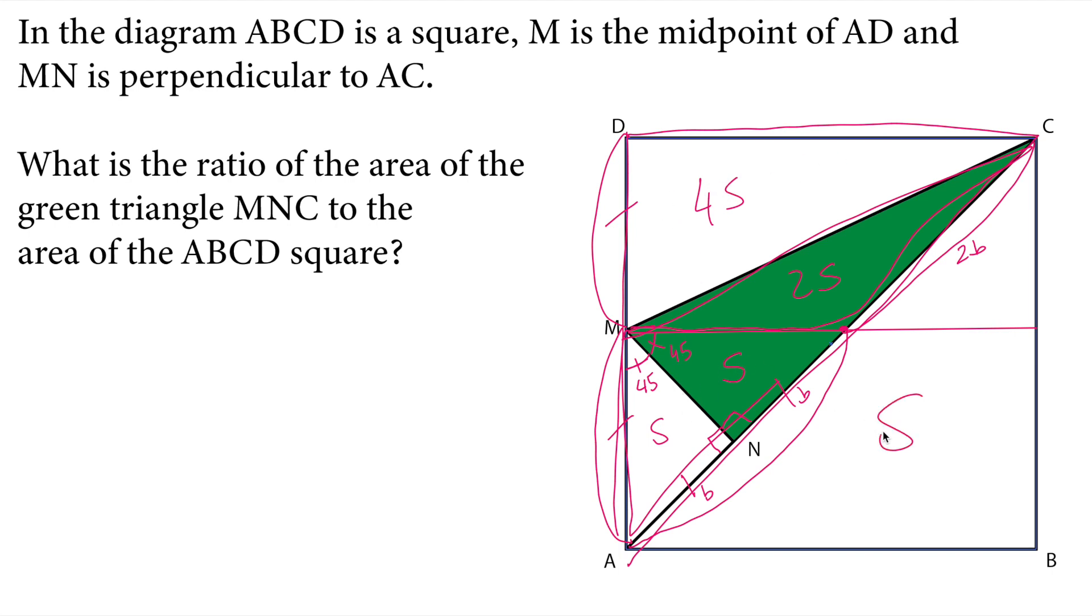We have four S, another four S, eight S, we have eight S on the other side of the square. Very good, we found the square area in terms of the area of the green triangle, so the green triangle is three S.